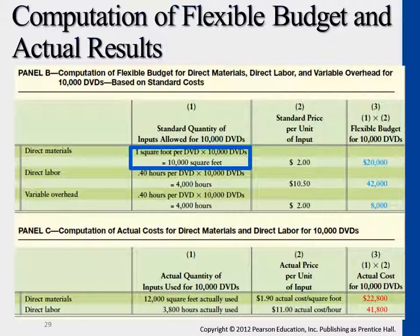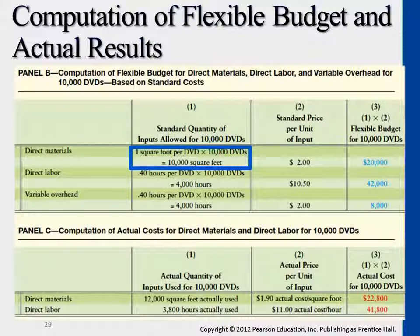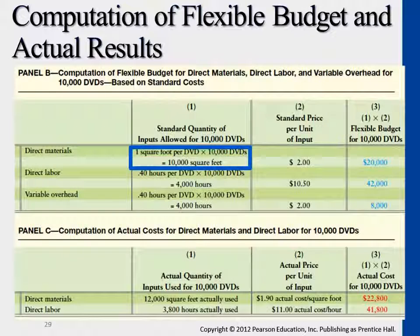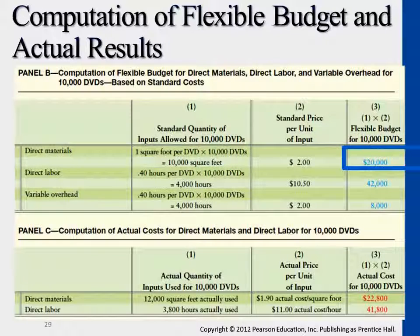The blue highlighted area here — direct materials. The standard quantity, meaning what we expect to spend on producing the products, is 10,000 square feet of materials. And the standard unit cost is $2 per square foot. So overall, our flexible budget for 10,000 DVDs output: we expect to have direct material cost of $20,000. Times the square footage gives us the direct material cost.